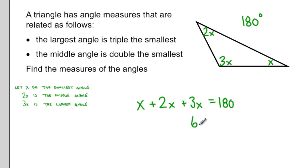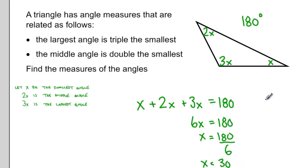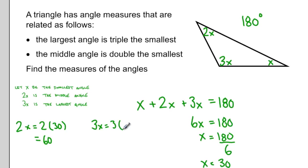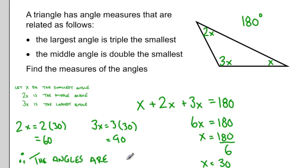These are all like terms so I can add them up and get 6x equals 180 degrees. If I divide both sides by 6, I get x equals 30. So my smallest angle is 30 degrees. My next angle would be 60 degrees. My largest angle would be 3x, which is 3 times 30, or 90 degrees. So I've used a little bit of algebra to solve this problem, and the angles are 30 degrees, 60 degrees, and 90 degrees.